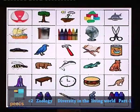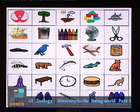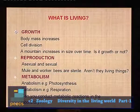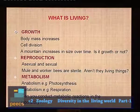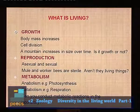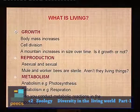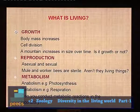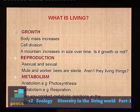Living things have characteristic features that differ from non-living things. The first important character is growth. Growth means increase in body mass by cell division. A mountain increases in size over time, but this is not growth in the biological sense because it is merely an increase in size. In biology, growth means increase in size or mass by cell division or by accumulation of protoplasm.